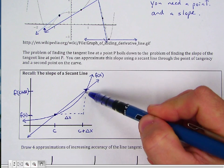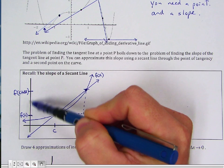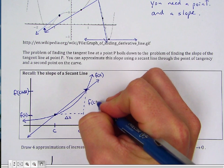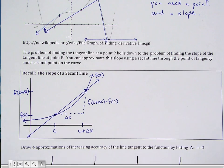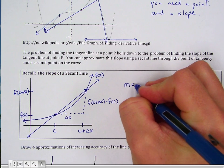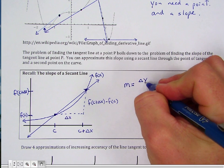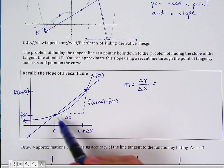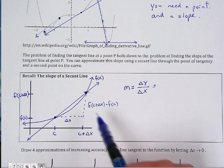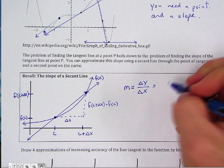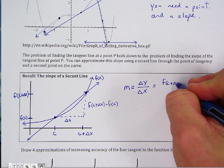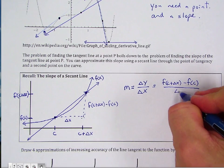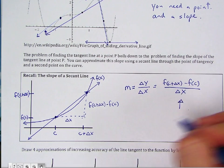Slope m is the change in y over the change in x, also rise over run. Based on our drawing, the change in y is f of c plus delta x minus f of c, over the change in x, which is just delta x. You might recognize this as the difference quotient.